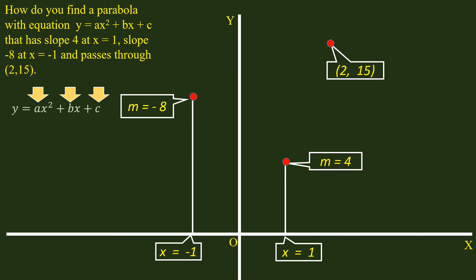Given the function y = ax² + bx + c, its slope at any given point is given by its first derivative. Now, we shall define the two slopes in terms of the derivatives.